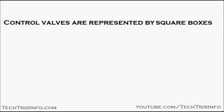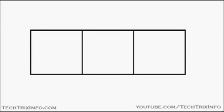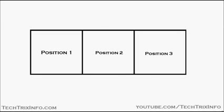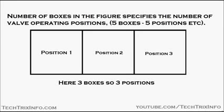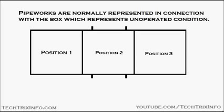Control valves are represented using square boxes — you can see the square boxes coming up. Each square box represents a position: position one, position two, and position three. The number of boxes in the figure specifies the number of valve operating positions. Here we have three boxes, so it's a three-position control valve being represented.